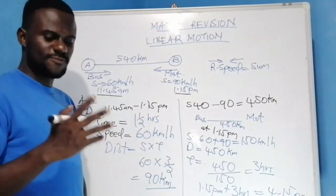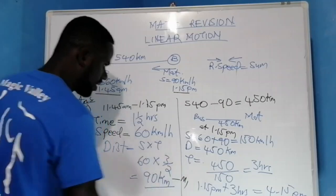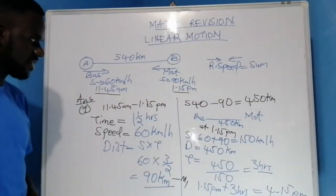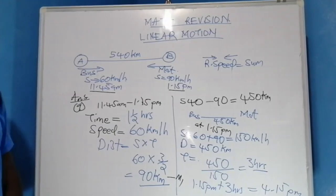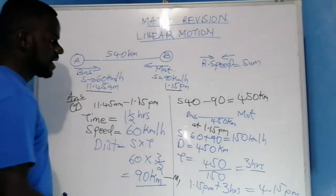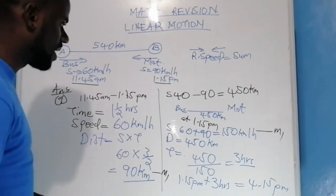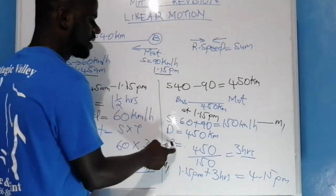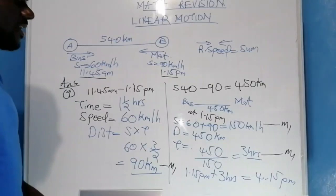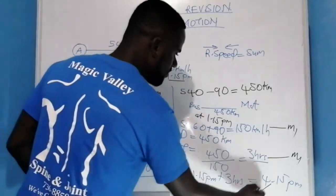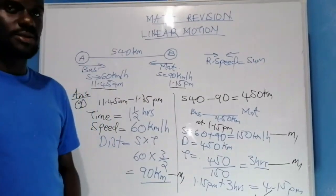The four marks are awarded as follows: the first mark for calculating the distance the bus traveled between 11:45 a.m. and 1:15 p.m.; the second mark for getting the relative speed; the third mark for calculating how long after 1:15 p.m. the two vehicles meet; and the final mark for the correct answer of 4:15 p.m.